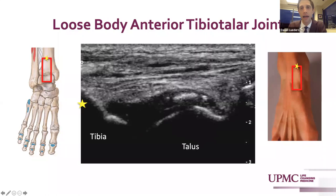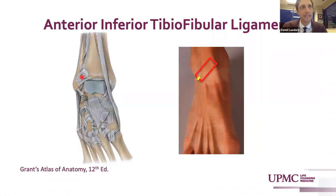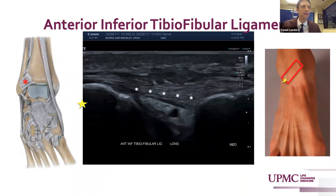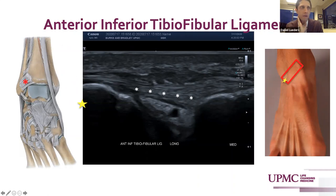The main ligamentous stabilizer visualized in the anterior ankle is the anterior inferior tibial fibular ligament, which courses from the lateral tibia to the medial fibula. It stabilizes the ankle against dorsiflexion inversion stresses and bridges from the distal tibia over to the fibula. It has a rather oblique course, so in a straight axial plane this may not be visualized well, requiring a rotation of the probe. One means is by anchoring the probe on the distal fibula, often over the anterior talofibular ligament, which can be more easily visualized.